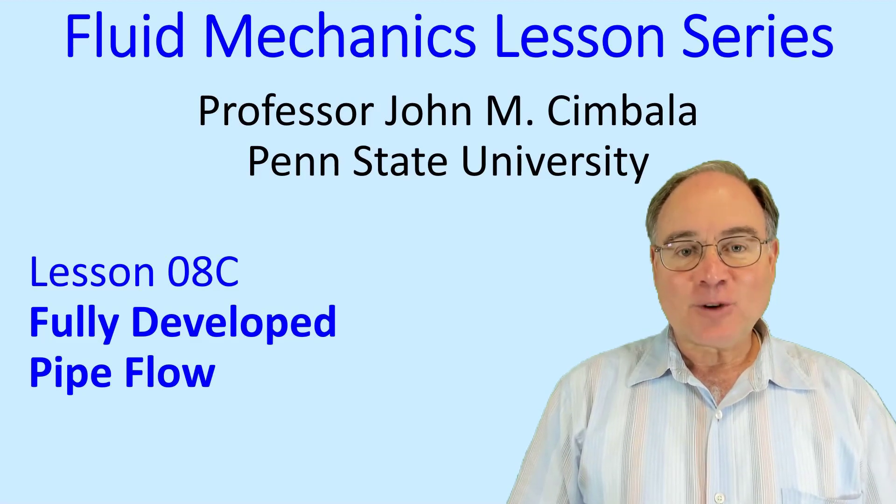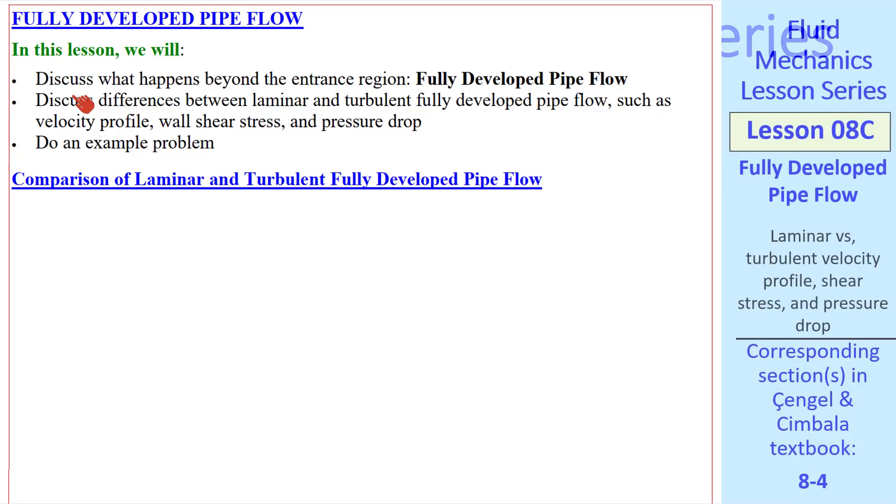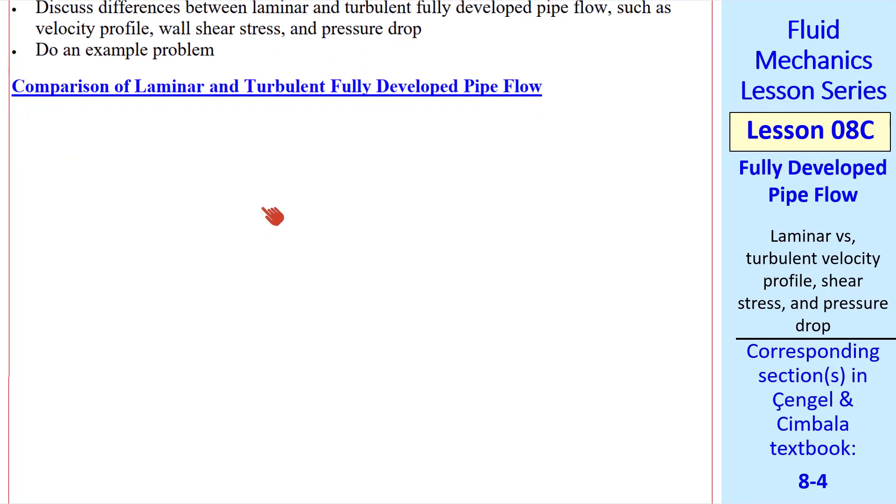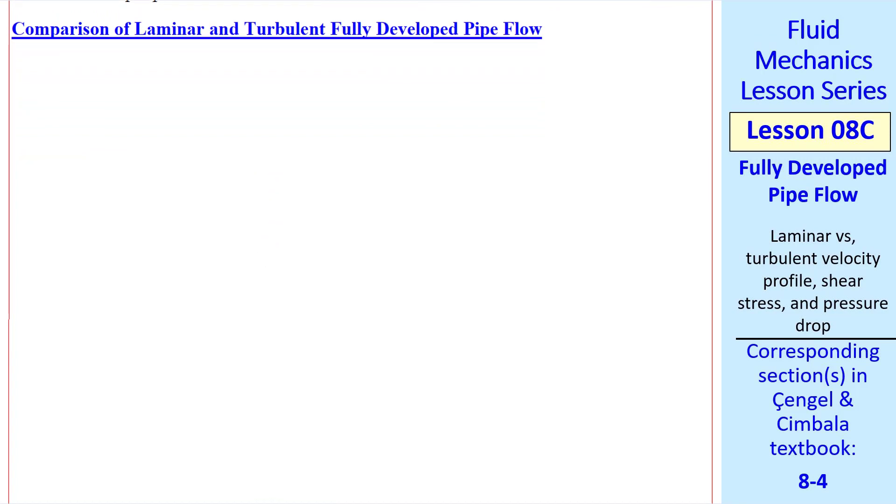Welcome to lesson 8c, Fully Developed Pipe Flow. In this lesson, we discuss what happens beyond the entrance region, what we call the fully developed pipe flow region. We'll look at differences between laminar and turbulent fully developed pipe flow, such as velocity profile, wall shear stress, and pressure drop. And we'll do one example problem.